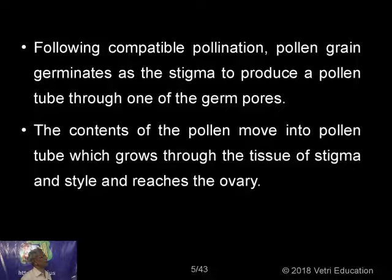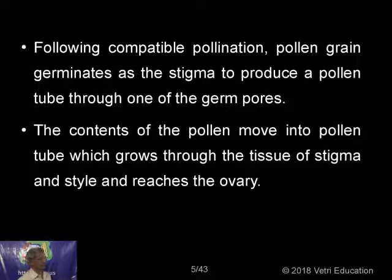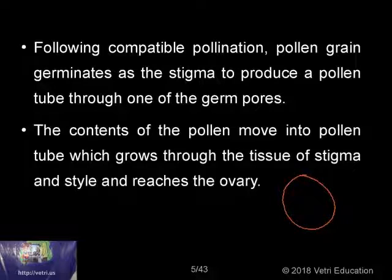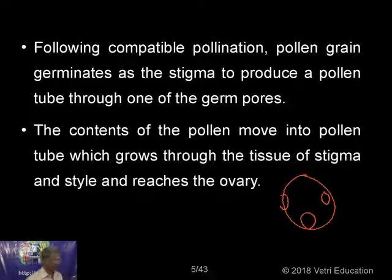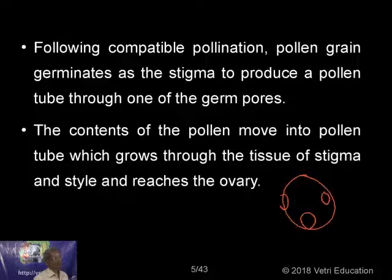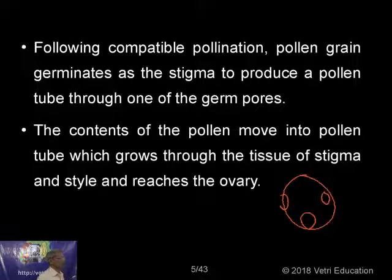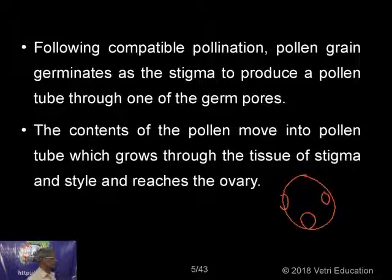Following compatible pollination, the pollen grain germinates on the stigma to produce a pollen tube through one of the pollen germination pores. In the pollen grain, there will be pollen pores, and through one of these pores the pollen tube grows and brings about fertilization. The contents of the pollen move into the pollen tube, which grows through the tissue of stigma and style and reaches the ovary.